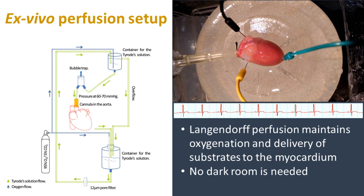Now we need a perfusion setup. In our lab we use a standard Langendorff perfusion system, which delivers solution to keep the heart alive. You can use custom flow or custom pressure — it's up to you. You don't need a dark room unless doing optical mapping, because the ambient light wavelength won't interfere with the wavelength needed for channelrhodopsin stimulation. Here you can see a heart that is nice and happy in the perfusion setup.